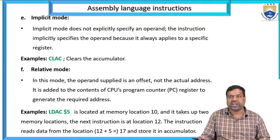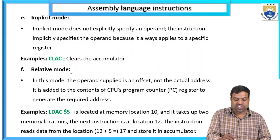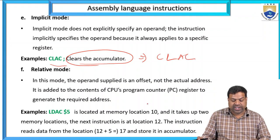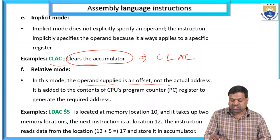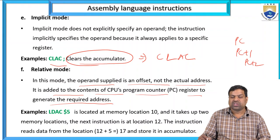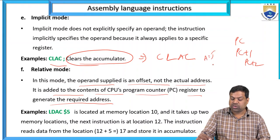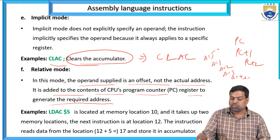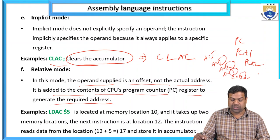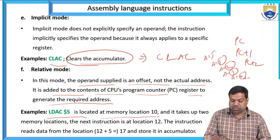Implicit mode does not explicitly specify an operand; the instruction implicitly specifies the operand because it always applies to a specific register. Example: CLAC — clear the accumulator. Relative mode: the operand supplies an offset, not the actual address, and the content of the CPU program counter (PC) is used to generate the required address. For example, if A = 5, I count PC, PC+1, PC+2, PC+3, PC+4.